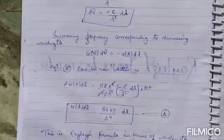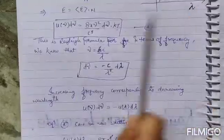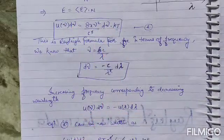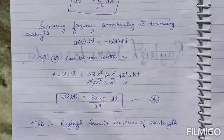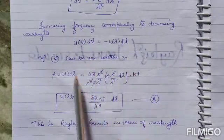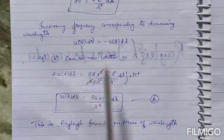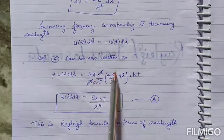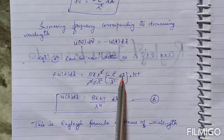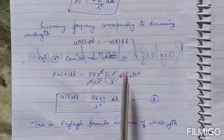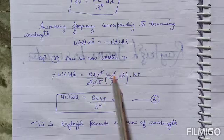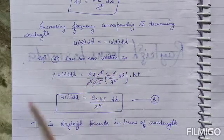From equation A, u(ν)dν = 8πν²/c³ dν kT. If we relate to this formula, then -u(λ)dλ equals 8π(c/λ)²/c³ times (-c/λ²)dλ kT. If we solve further, c³ cancels out.